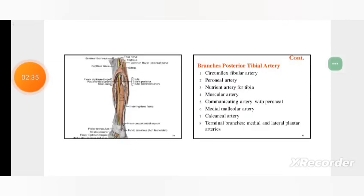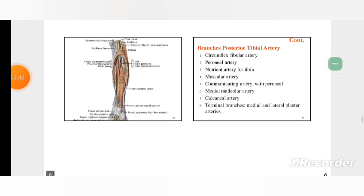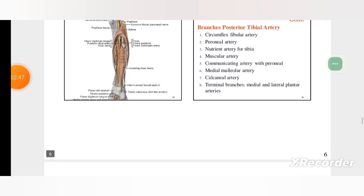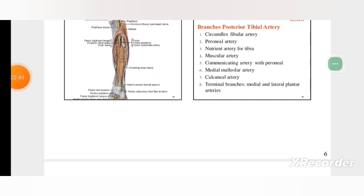Branches of posterior tibial artery: circumflex fibular artery, peroneal artery, nutrient artery for tibia, muscular artery, communicating artery with peroneal, medial malleolar artery, calcaneal artery, and terminal branches medial and lateral plantar arteries.